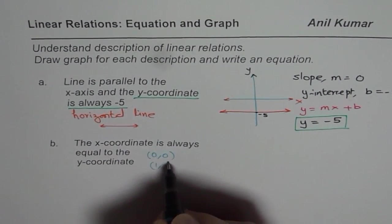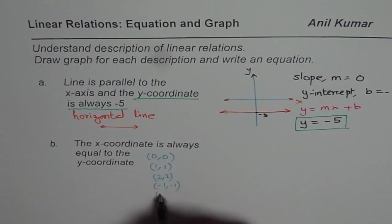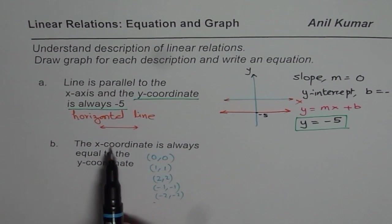We are considering points like (0,0), (1,1), (2,2), or (-1,-1), or (-2,-2). These kinds of coordinates where x-coordinate is always equal to y-coordinate.